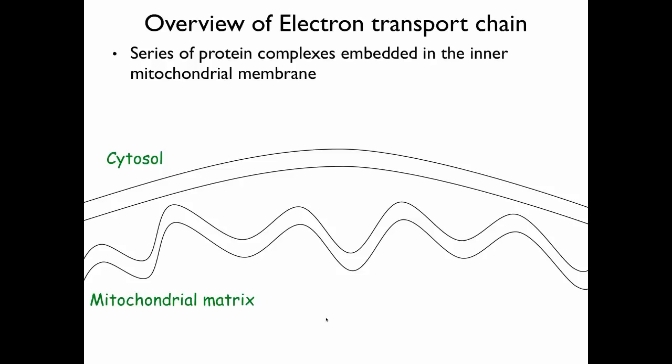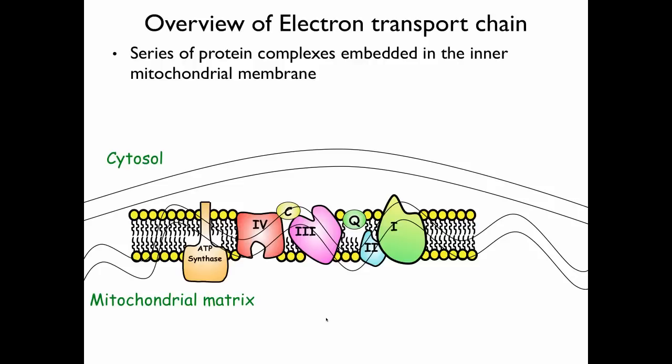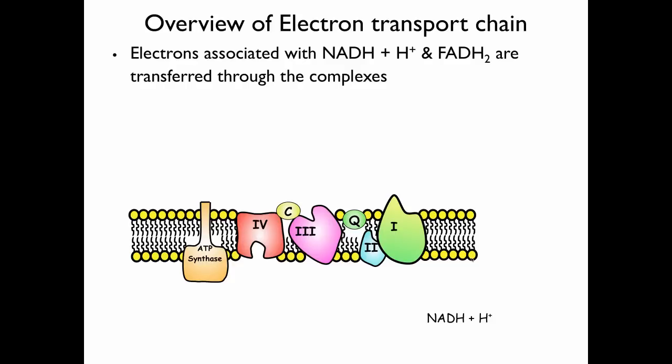The electron transport chain is a series of protein complexes found on the inner mitochondrial membrane. I've depicted the phospholipids as phospholipids. Here's our inner mitochondrial membrane with some proteins embedded within it, and we call these proteins the electron transport chain. We're going to talk specifically about the electron transport chain.